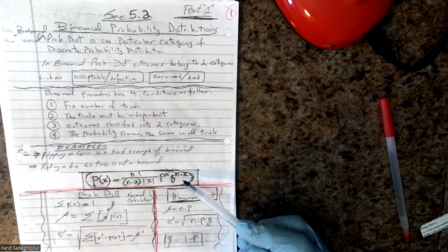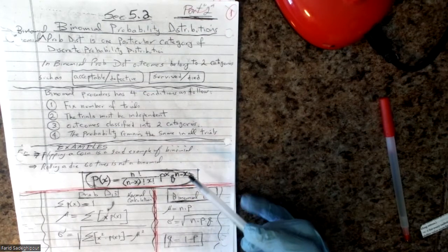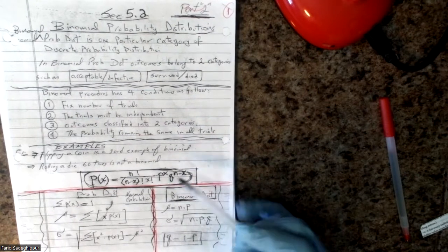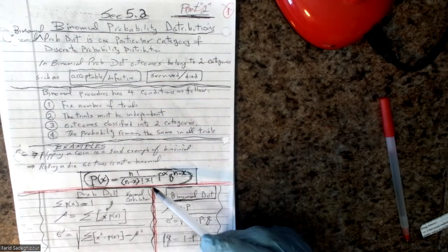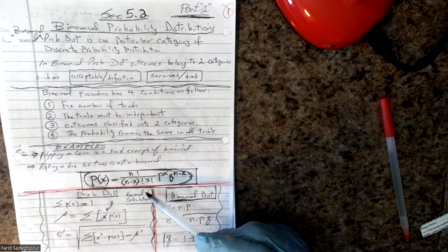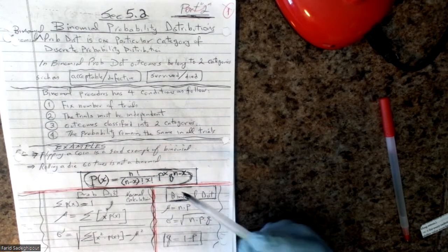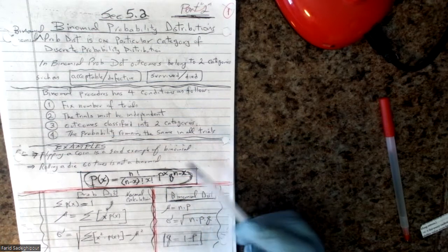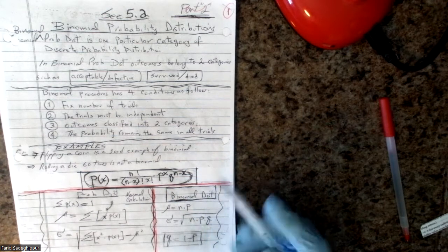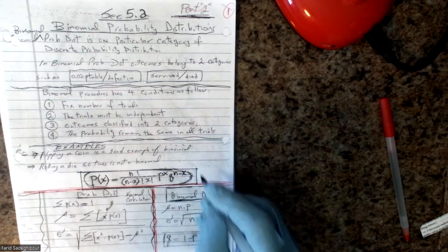This is the binomial formula. The binomial formula is n factorial over (n minus x) factorial times x factorial, times the probability of success to the power of x, where q is always 1 minus p.